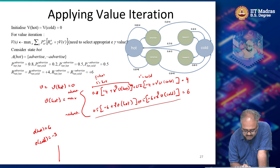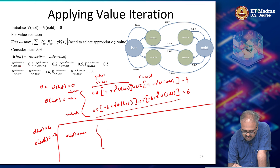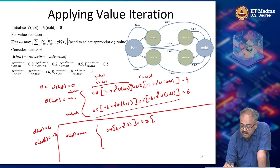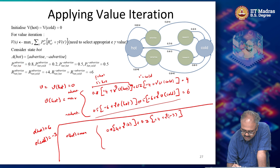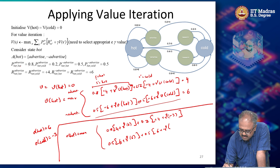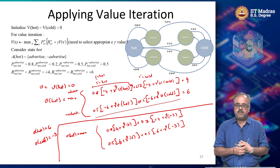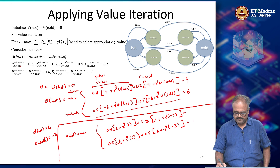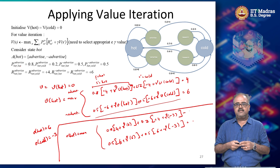For the second iteration, V_hot is computed as: max of [0.8 × (4 + gamma × 6) + 0.2 × (4 + gamma × (−3))] versus [0.5 × (6 + gamma × 6) + 0.5 × (6 + gamma × (−3))], with gamma = 0.9. You can already see the one-step future impact starting to factor in cold state values. We keep iterating in this way. This is how you apply value iteration to a specific numeric setting, and we will see a more expanded example in one of the next lectures.